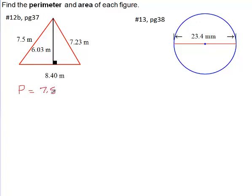So it's 7.5 plus 7.23 plus 8.40, and that will give us a total of 23.1, I believe. Let me just double check that. And this of course is meters. When it's perimeter, just meters, not meters squared, not meters cubed, just meters for perimeter, just adding up the lengths around. 23.1 meters.